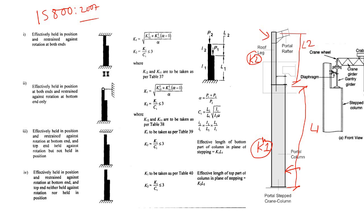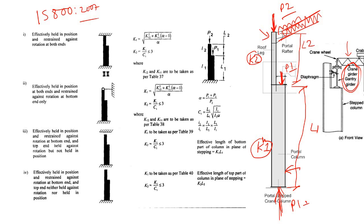Following IS 800:2007, the first step to find k1 and k2 is determining the forces. The force p2 comes from the roof loading — from a truss, portal member, or rafter reaction. The force p1 is the reaction from the gantry analysis. The net reaction at the bottom is simply p1 plus p2.